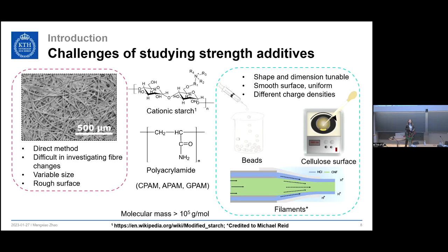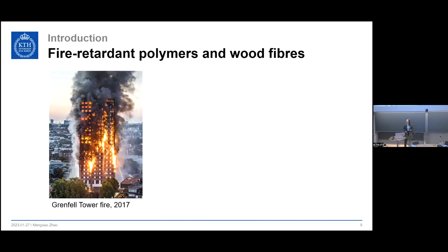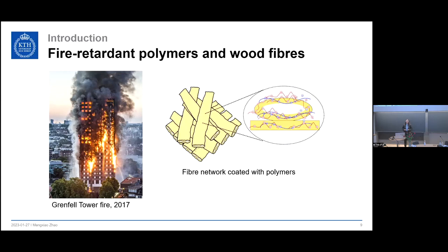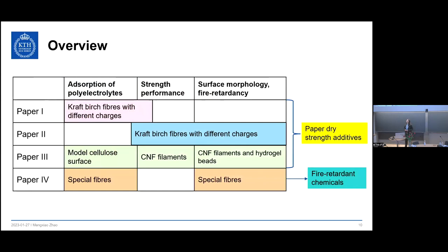The other chemicals studied are fire retardant chemicals. Fire can create lots of damage to both objects and human life, and when plastics are involved the fire can spread very fast. So when we design wood fiber-based materials, we need to think about this — if we cannot stop the fire, at least we want to slow down its spreading. One approach is to adsorb fire retardant polymers onto the fibers to impart fire retardant properties. In this thesis we have four papers: papers one to three study paper dry strength additives, and paper four studies fire retardant chemicals on fibers.